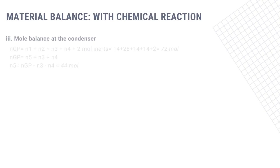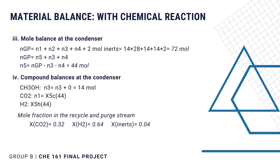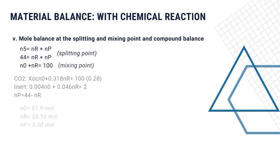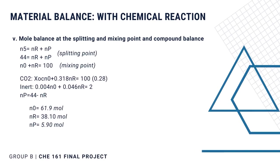Third, we need to perform mole balances at the condenser to solve for N5, which represents the recycle stream. Fourth, we need to perform compound balances in the condenser to solve for the mole fraction in the recycle and the purge stream. Fifth, performing mole balance at the mixing and splitting point and performing the compound balances, we get the molar flow rate per hour of the feed, purge, and the recycle stream.